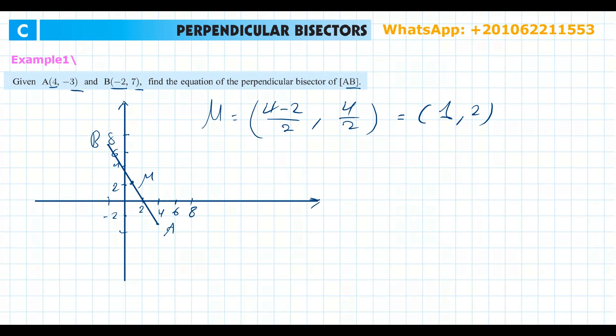To find the equation of the perpendicular bisector, we first find the gradient of line segment AB. The slope equals the difference in y over the difference in x: (7 - (-3)) / (-2 - 4) = 10 / (-6) = -5/3. This is the slope of the line segment AB.